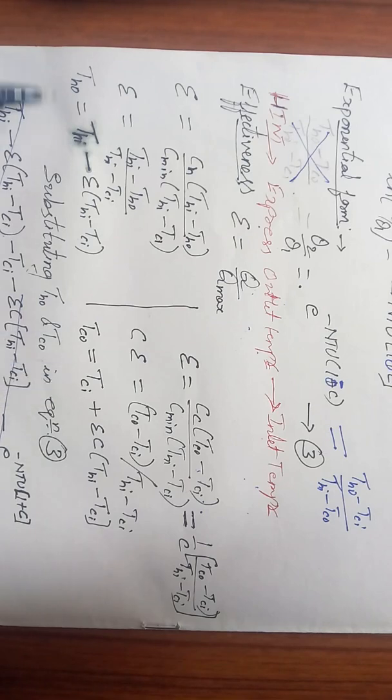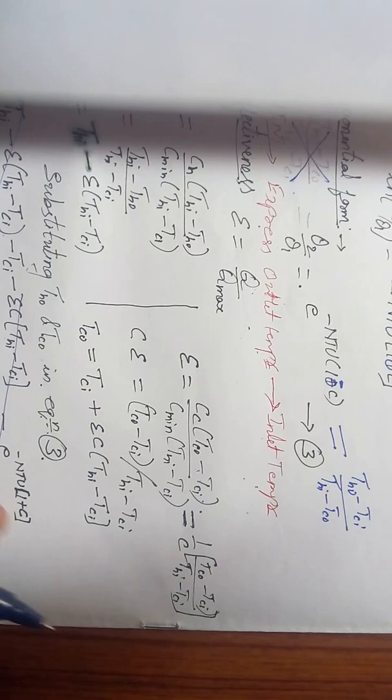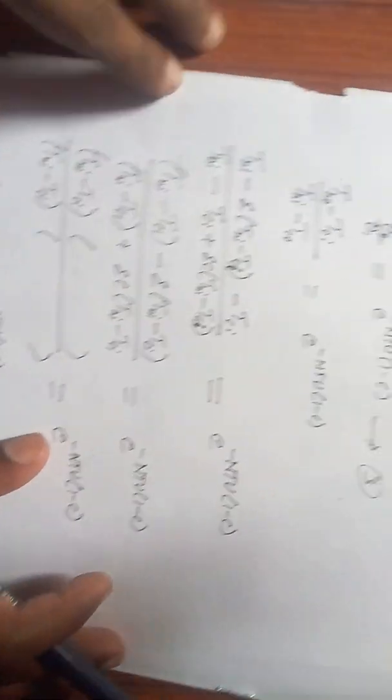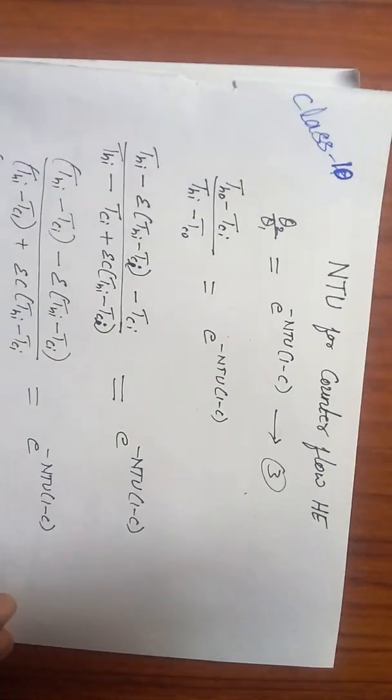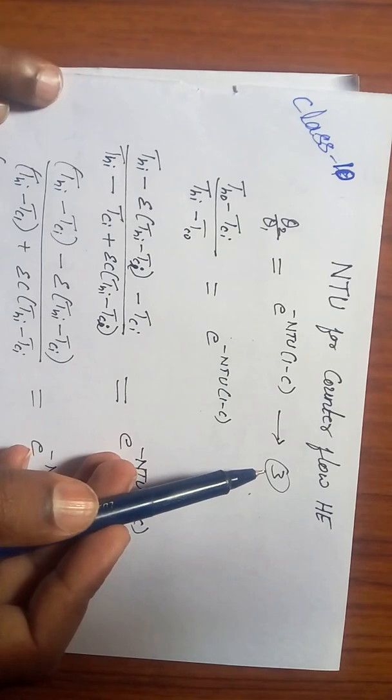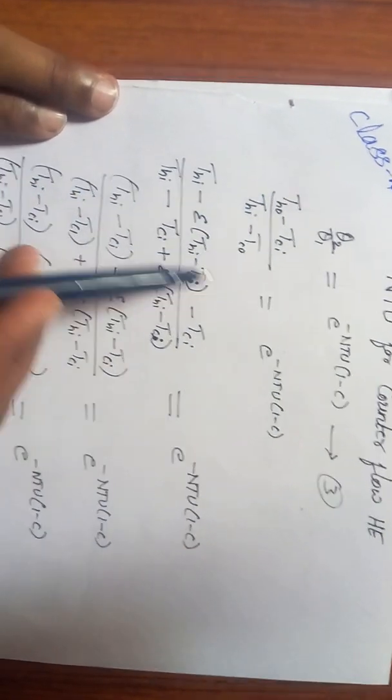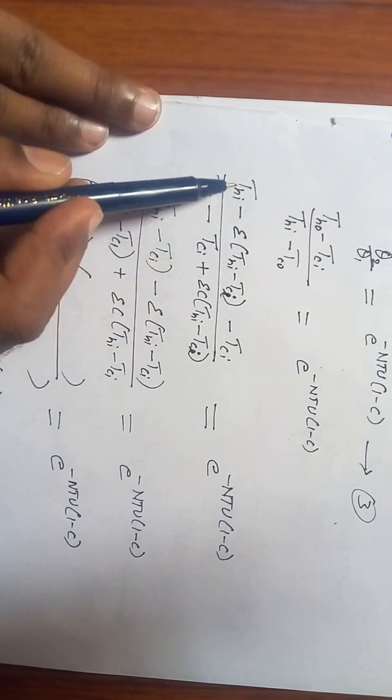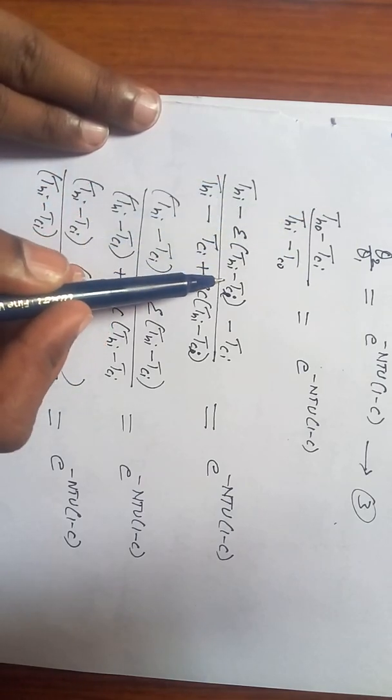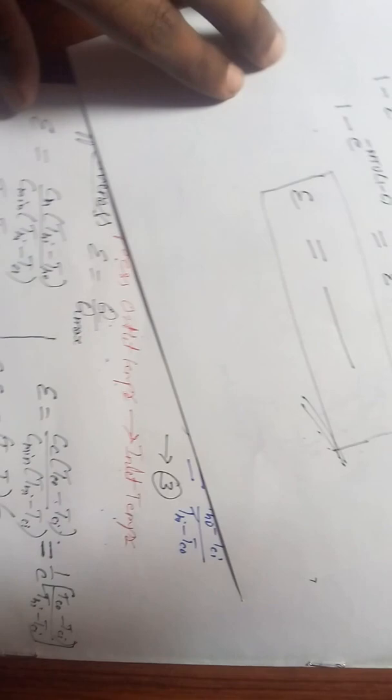Now substituting these two values in equation number 3. In this equation, in equation number 3, if I substitute TH_out and TC_out, TH_out was TH_in minus epsilon times (TH_in minus TC_in). Where did we get this from? From here.